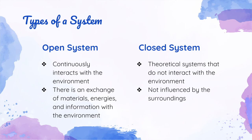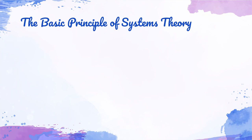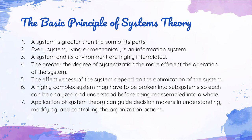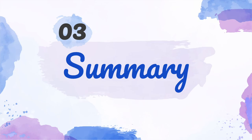The basic principles of systems theory: a system is greater than the sum of its parts; every system, moving or mechanical, is an information system; a system and its environment are highly interrelated; the greater the degree of systemization, the more efficient the operation; the effectiveness of the system depends on optimization; a highly complex system may have to be broken into subsystems so each can be analyzed and understood before being reassembled into a whole; application of systems theory can guide decision makers in understanding, modifying, and controlling organizational actions. All factions of systems theory — including input, throughput, output, adaptation, and feedback — are essential to the exchange of ideas and are constructive to the nursing process and nursing research.